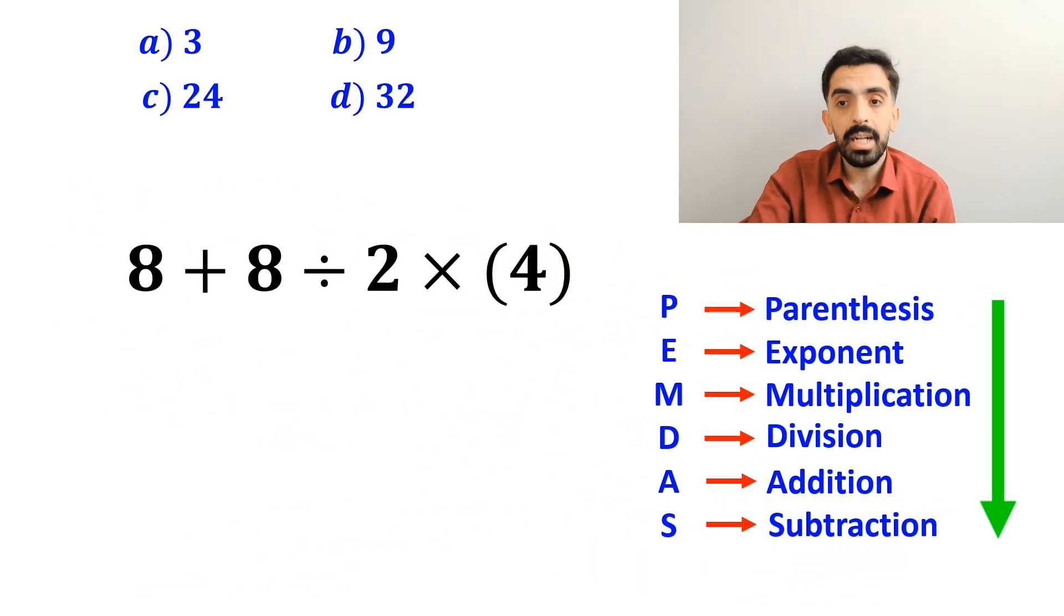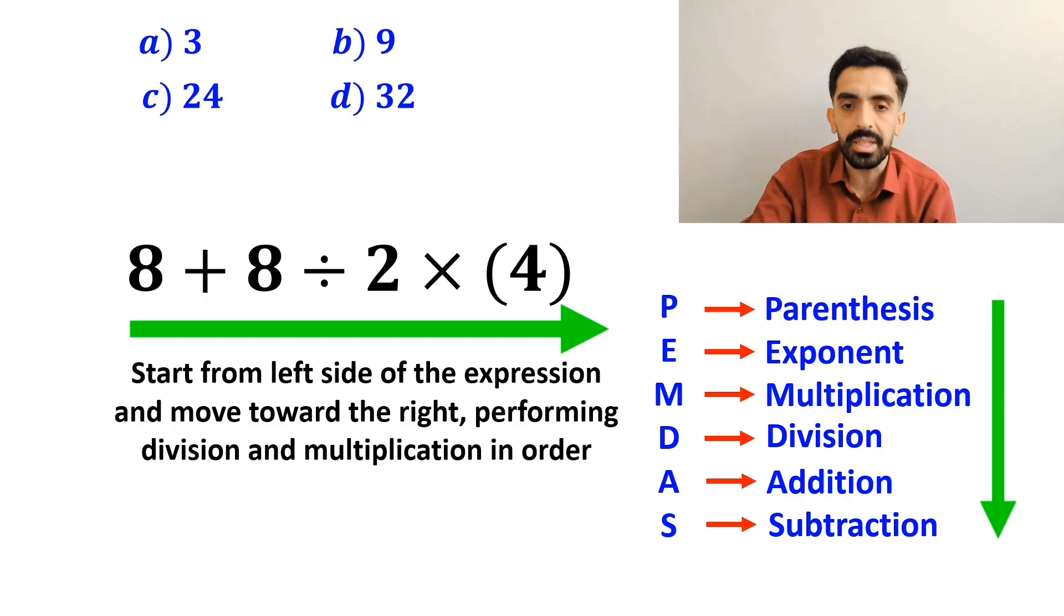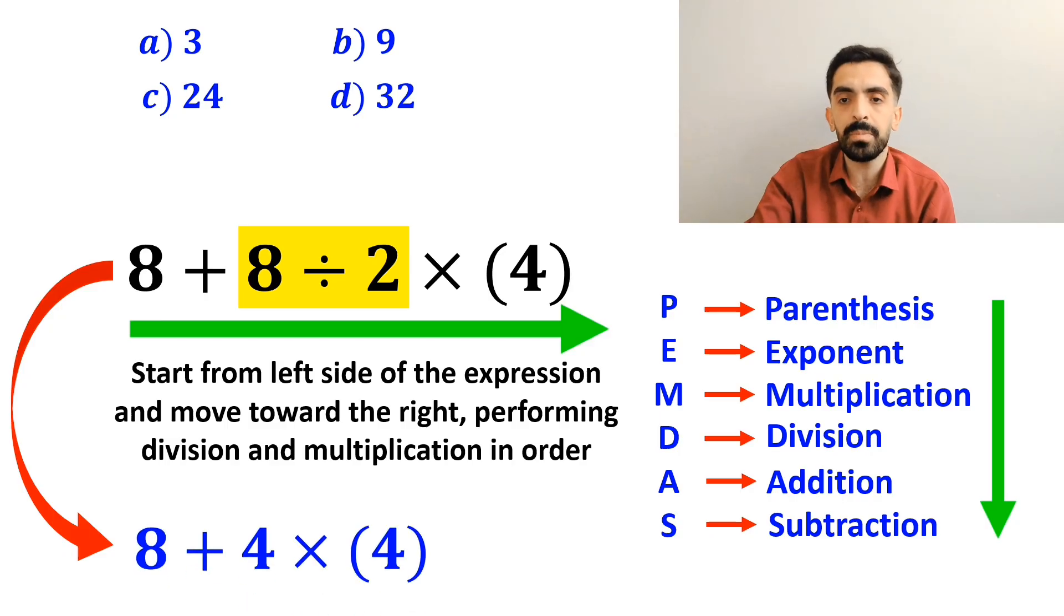In this case, the best thing to do is to start from the left side of the expression and move toward the right, performing division and multiplication in order. So, first we perform the division between 8 and 2, which simplifies the expression to 8 plus 4 times 4.